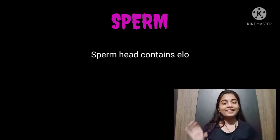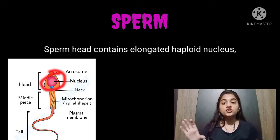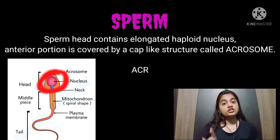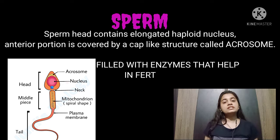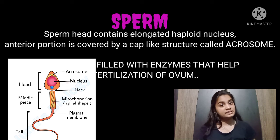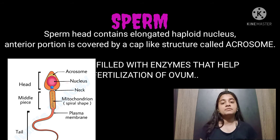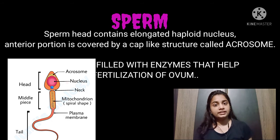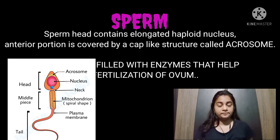Let's talk about the sperm head. In the sperm head there is an elongated nucleus, which is haploid — that means it has only n number of chromosomes, which is 23 chromosomes, and they are not present in pairs.